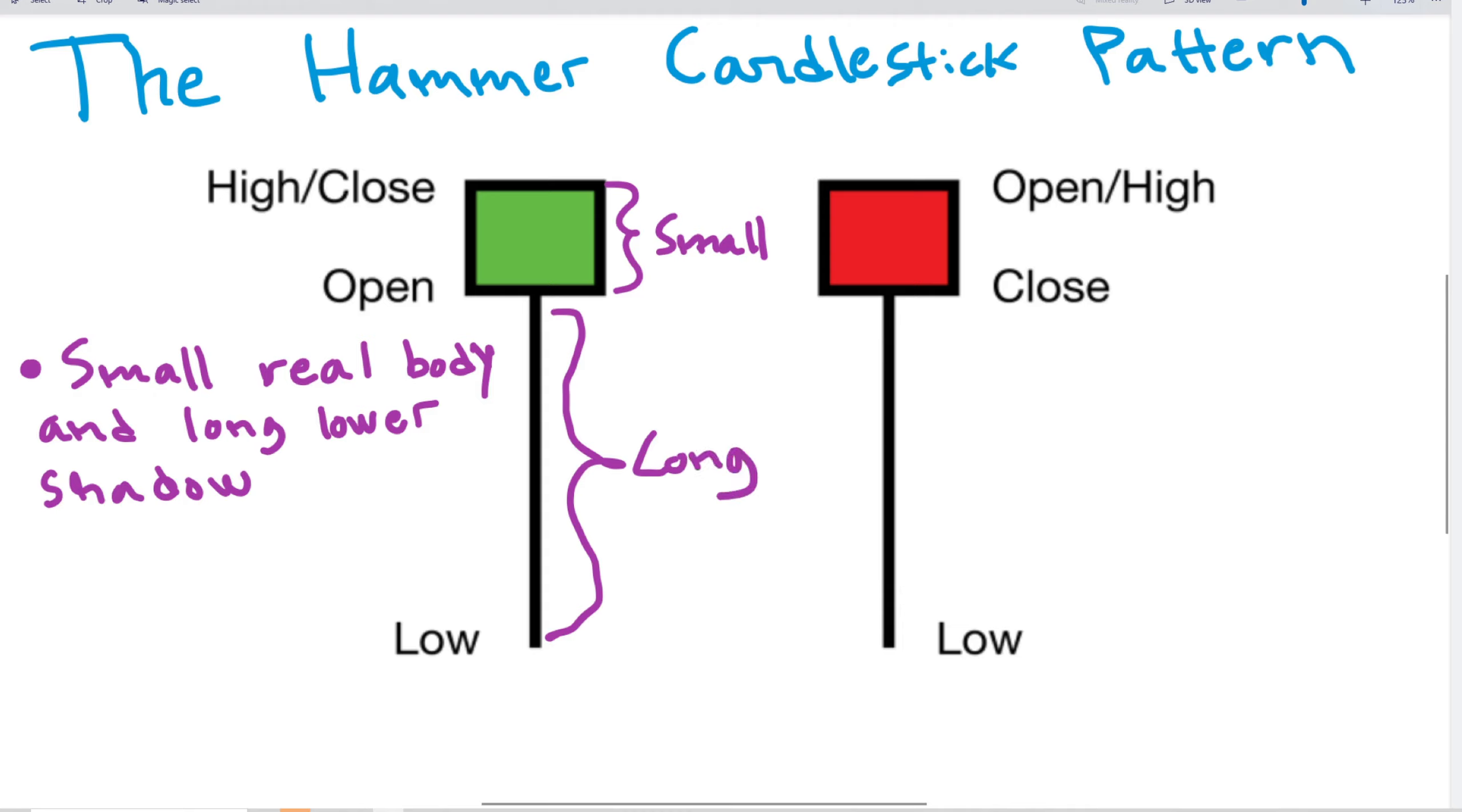In general, in order for it to be a hammer candle we want the lower shadow to be at least twice the length of the real body. And as you can see here, a hammer candle can be both green and red. One could argue that the green one is a bit better than the red one but both are definitely counted as valid hammer candles. The difference between the green one and red one is basically that the green one closes up here and the red one closes down here.